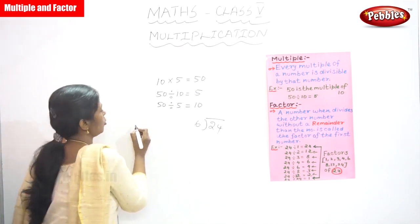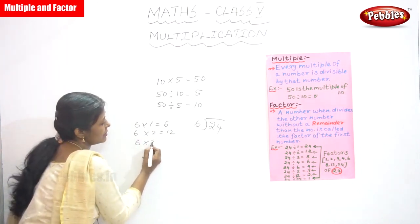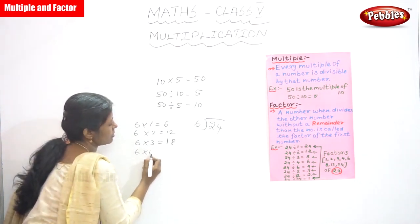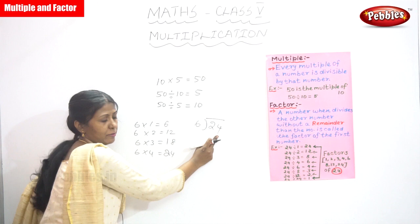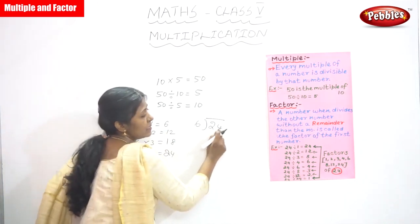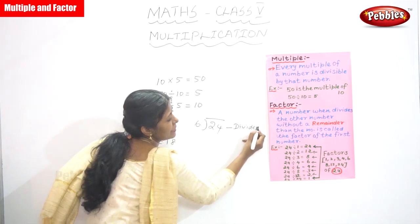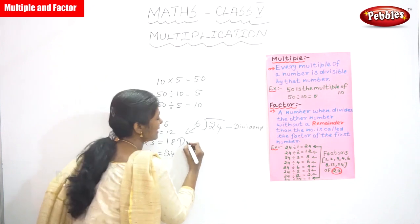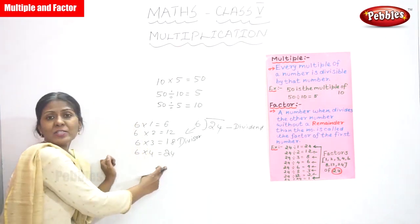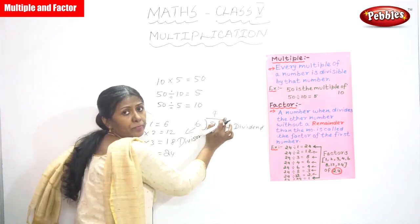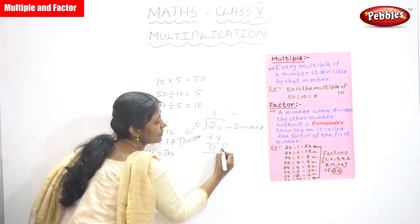You must know the 6 times table: 6 ones are 6, 6 twos are 12, 6 threes are 18, 6 fours are 24. So the answer is 6 into 4 gives 24. The inside number is called the dividend, and the outside number is called the divisor. The answer on top is called the quotient. 6 into 4 is 24, so the final answer — the remainder — is 0.